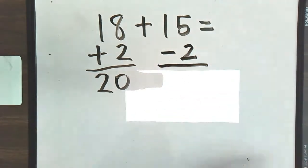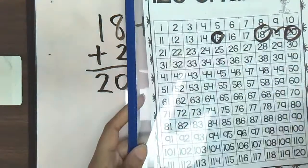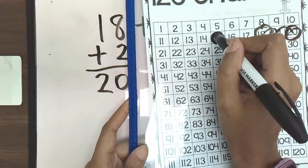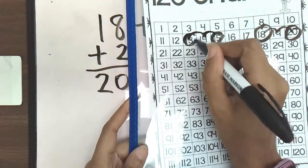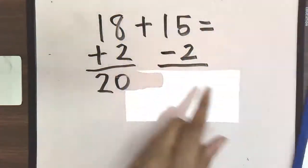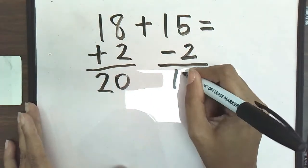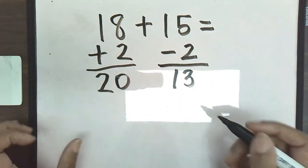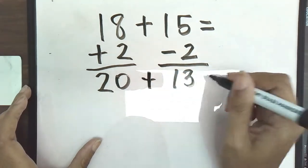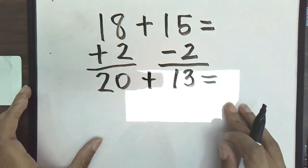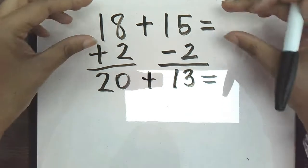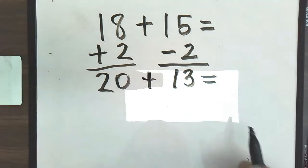So if I look at my 120s chart, I have 15 and subtracting or minus two. So I go back two hops and that would put me at 13. So 15 minus two is 13. Now I have to bring those numbers back together.